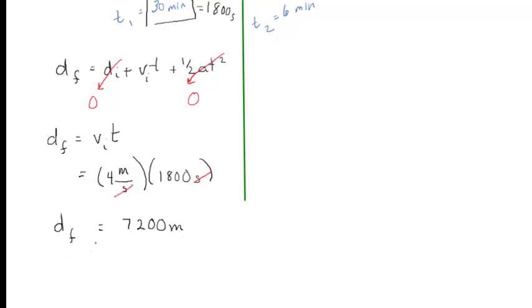Notice the second units cancel out. So we've got the right unit, which is meters. So we know how far he went when he was marching at a constant rate. What about when it started raining?